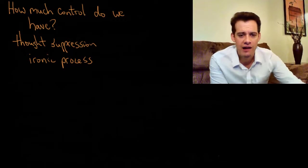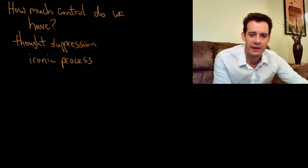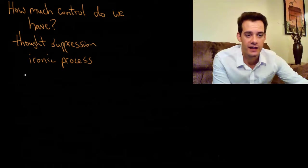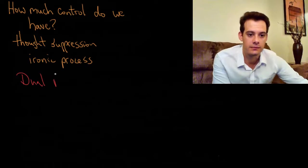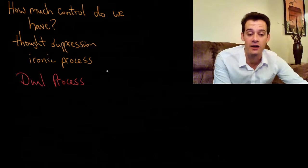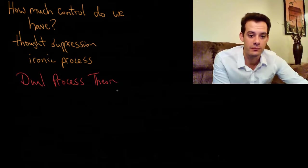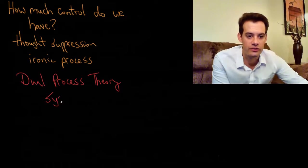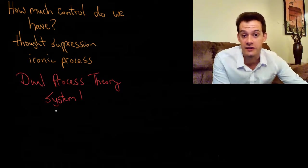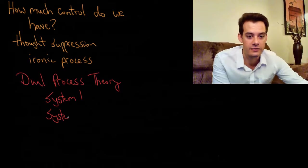We can sort of roughly divide our mind up into two main parts. So this is known as dual process theory. And the idea is that we have conscious processing and unconscious processing, and they're both happening at the same time. So we have these two systems. And these are called System 1 and System 2.